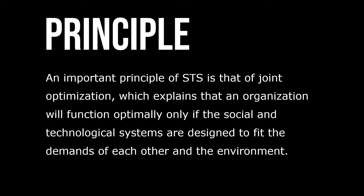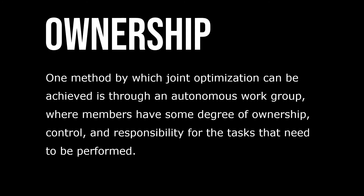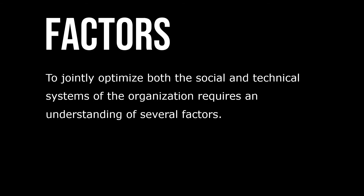only if the social and technological systems are designed to fit the demands of each other and the environment. One method by which joint optimization can be achieved is through autonomous work groups, where members have some degree of ownership, control, and responsibility for the tasks that need to be performed.